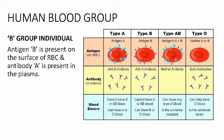Next, B group individuals. In B group individuals, antigen B is present on the surface of RBC — shown as a purple color arrow — and antibody A is present in the plasma, shown as a blue Y-shaped structure.